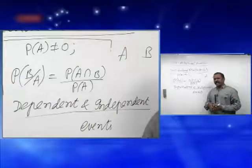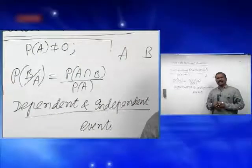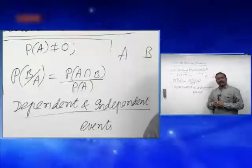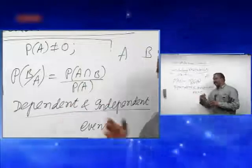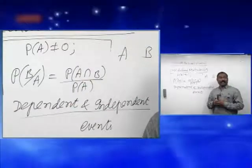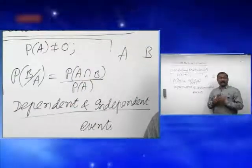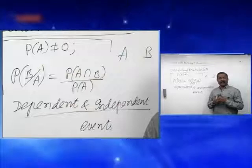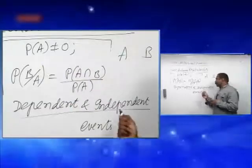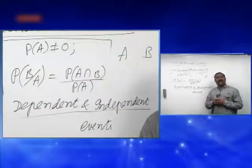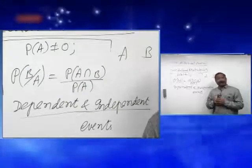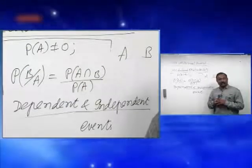You must clearly know the difference between dependent and independent events. Dependent means the occurrence of the first event influences the occurrence of the second. Independent means the occurrence of one event does not influence the occurrence of another event.